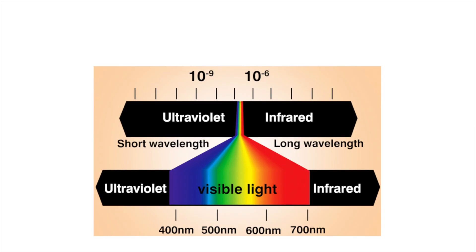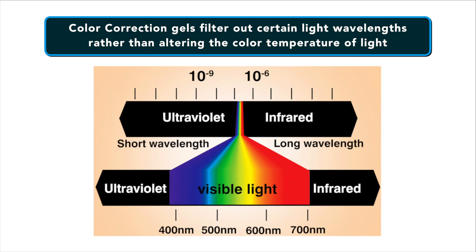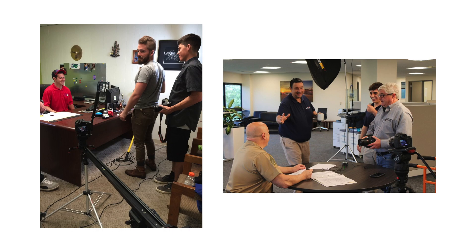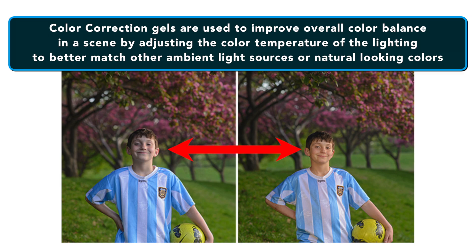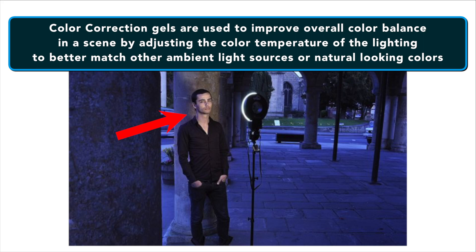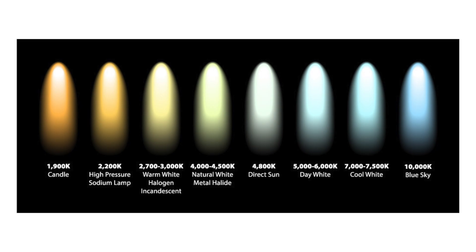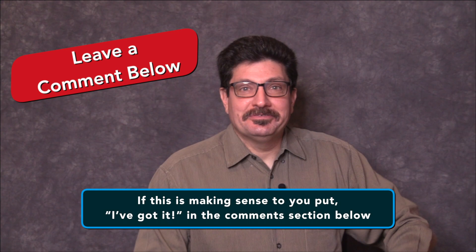Next are color correction gels. These useful gels filter out certain wavelengths rather than altering the color temperature. For example, old fluorescent lights typically have too many green wavelengths — use a color correction gel to remove the excess green. Green is an undesirable light for camera and stage because no one wants to look pale or sick on camera. Newer fluorescent lights offer more balanced light so color correction gels are becoming less popular, but you'll still want to know about them if you're shooting somewhere with older lighting. Color correction gels improve overall color balance in a scene by adjusting the color temperature to better match other ambient light sources or natural-looking colors.